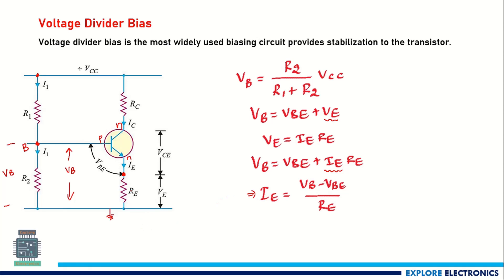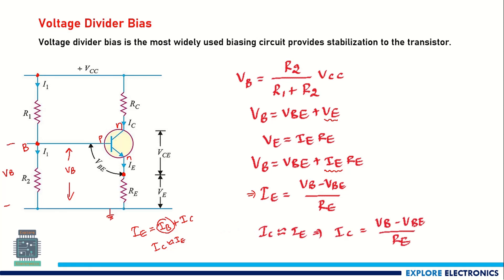We know that in a transistor, the total current IE equals IB plus IC. Since IB is very small, IC is nearly equal to IE. So if we treat IC as approximately equal to IE, the collector current IC equals (VB minus VBE) divided by RE. Importantly, there is no dependency on beta for IC, which makes this circuit more stable.